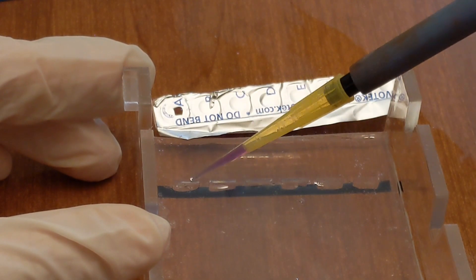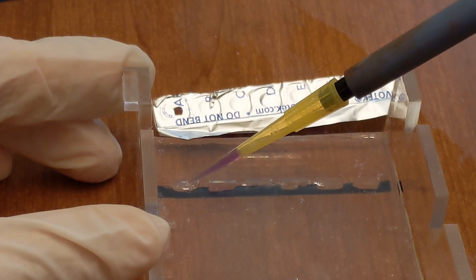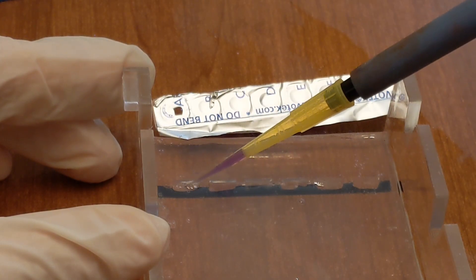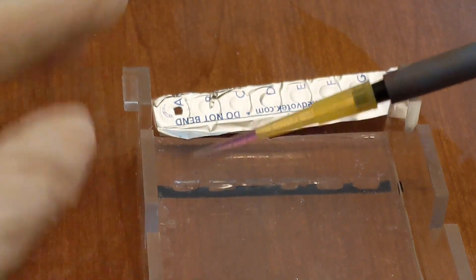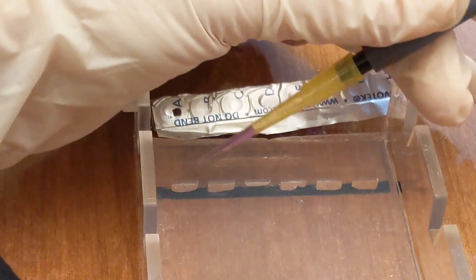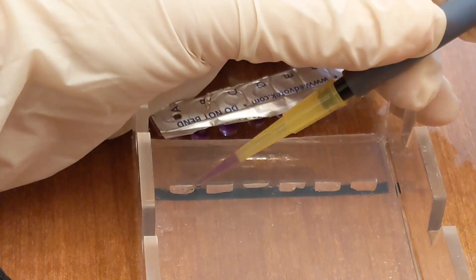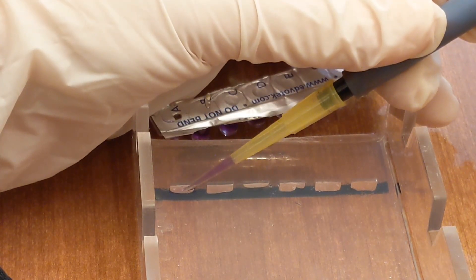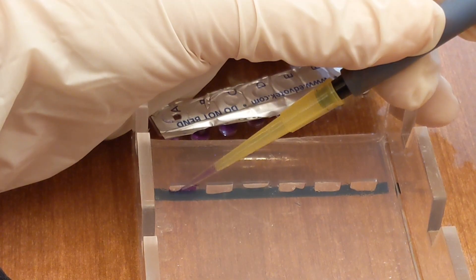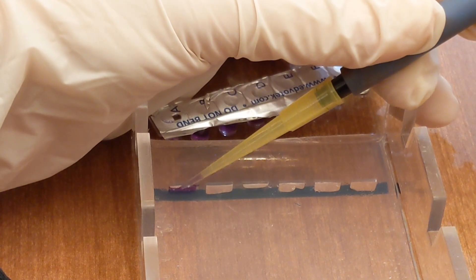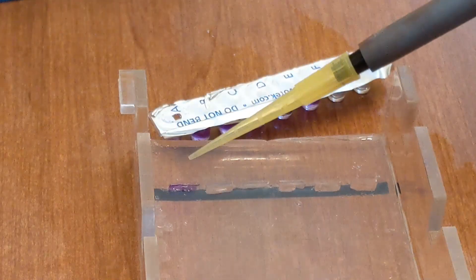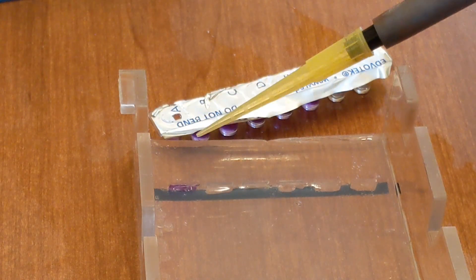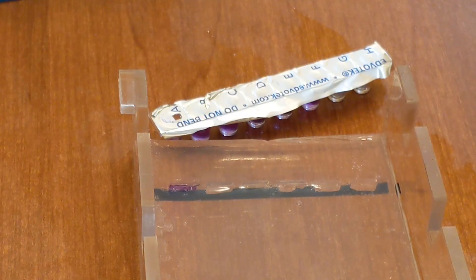I like to hold the tip at a little bit of an angle. Make sure it's down in the well but it's angled. And that just keeps me from piercing a hole in the well. As you add the DNA press all the way to the second stop and then pull the tip out before you let go otherwise you'll suck some back up. And then change your tips and repeat with each sample.